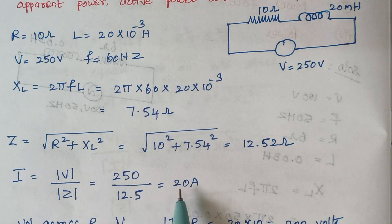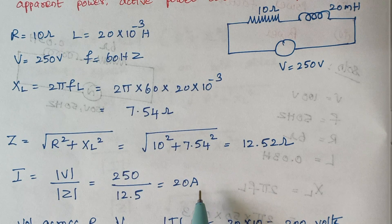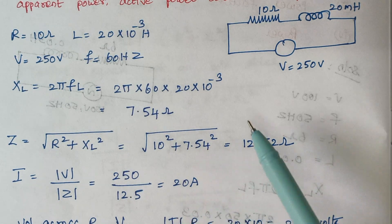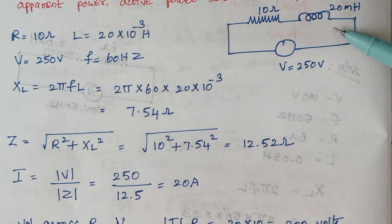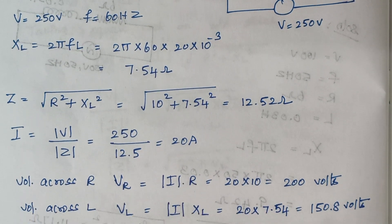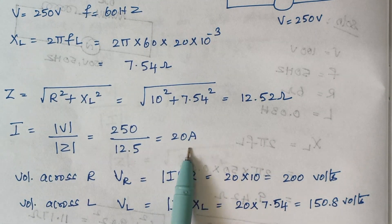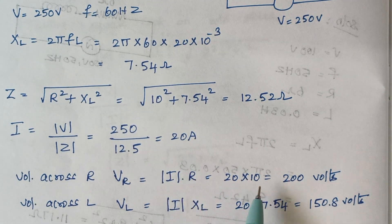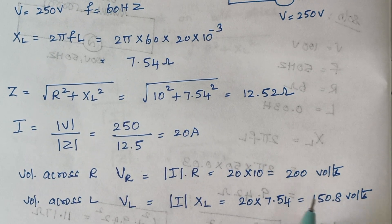V is 250 volts divided by Z = 12.52, giving the answer as 20 amps. Once we know the current, voltage drop across the resistor is I × R = 20 × 10 = 200 volts.